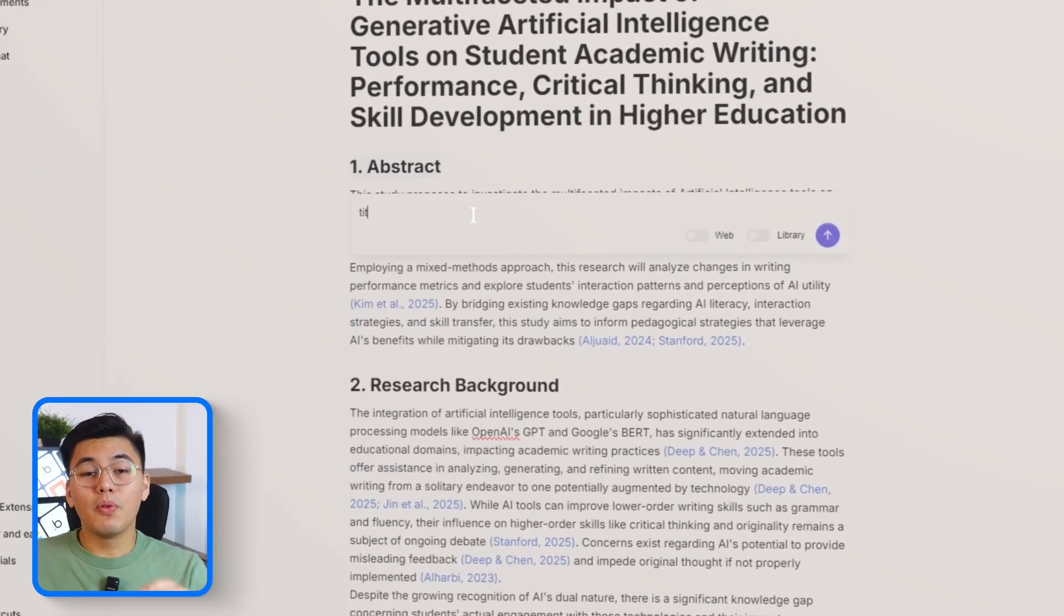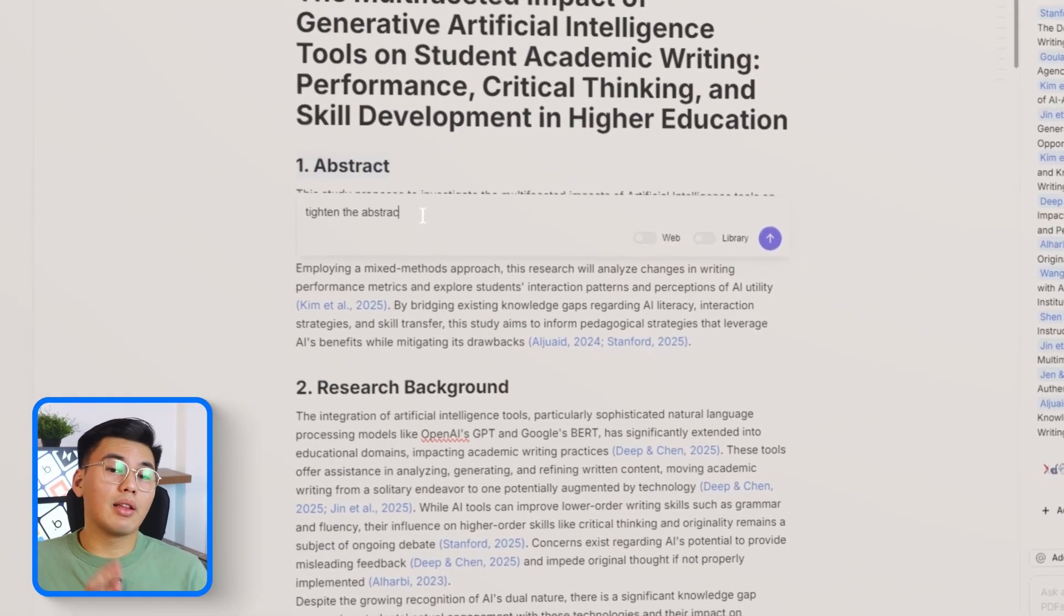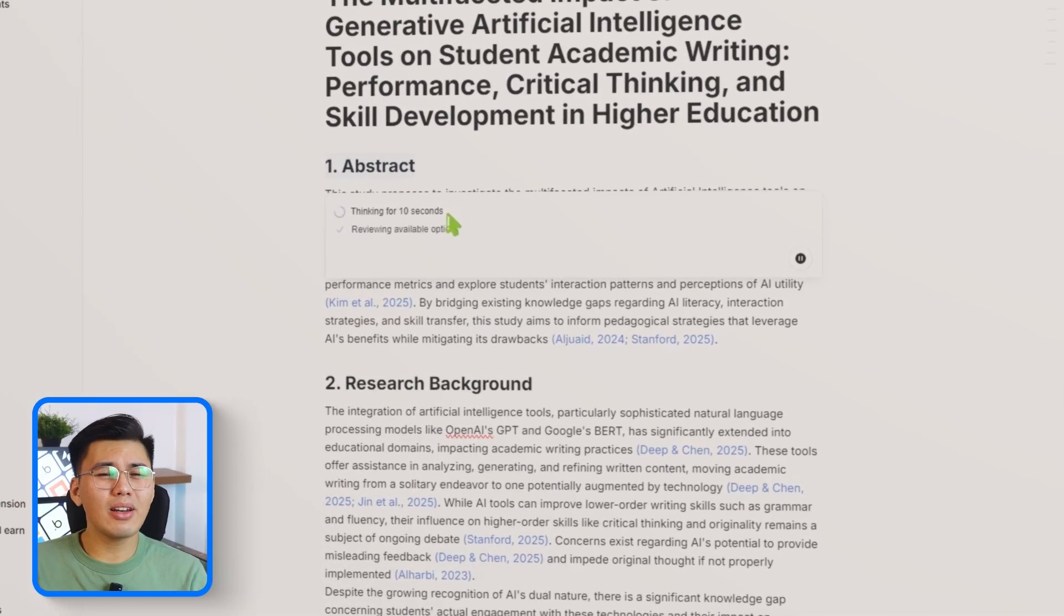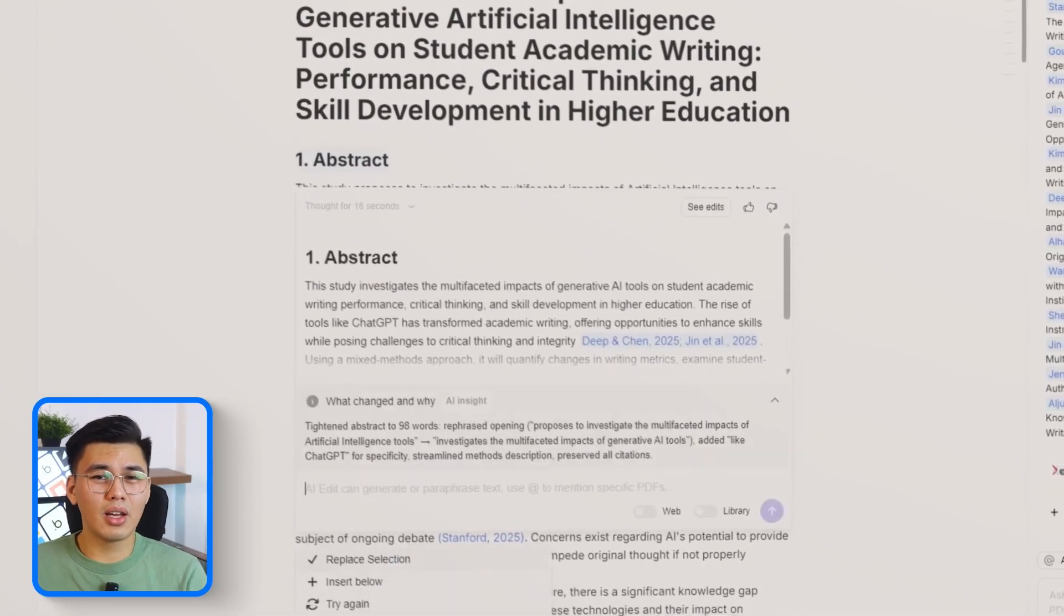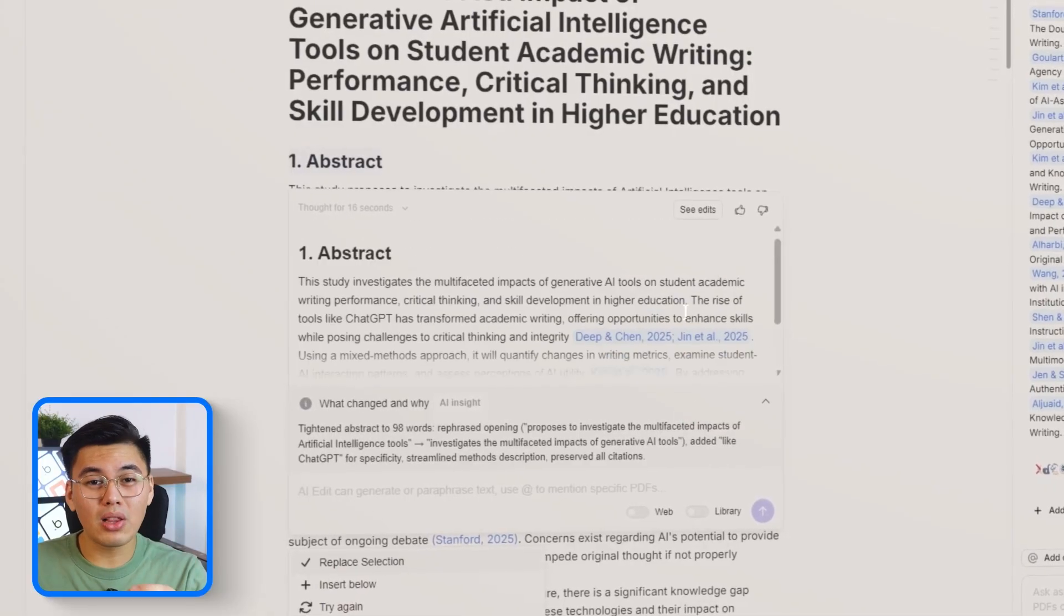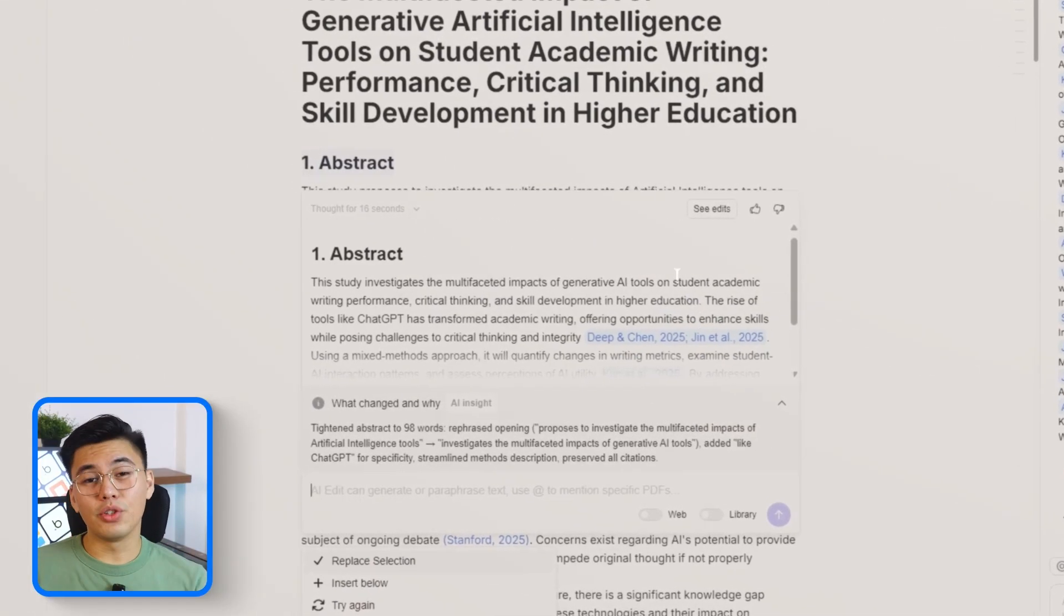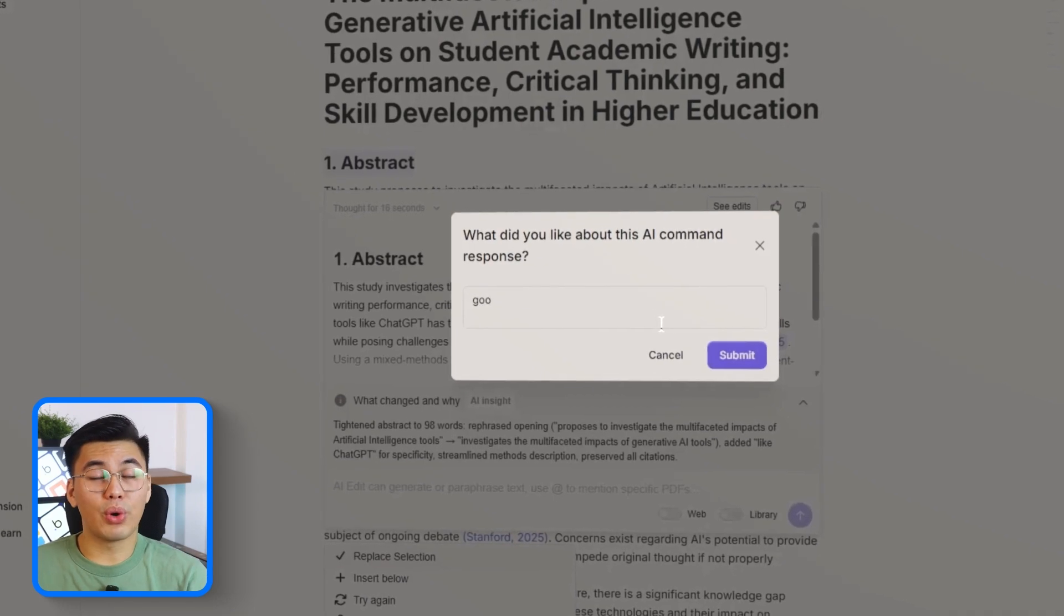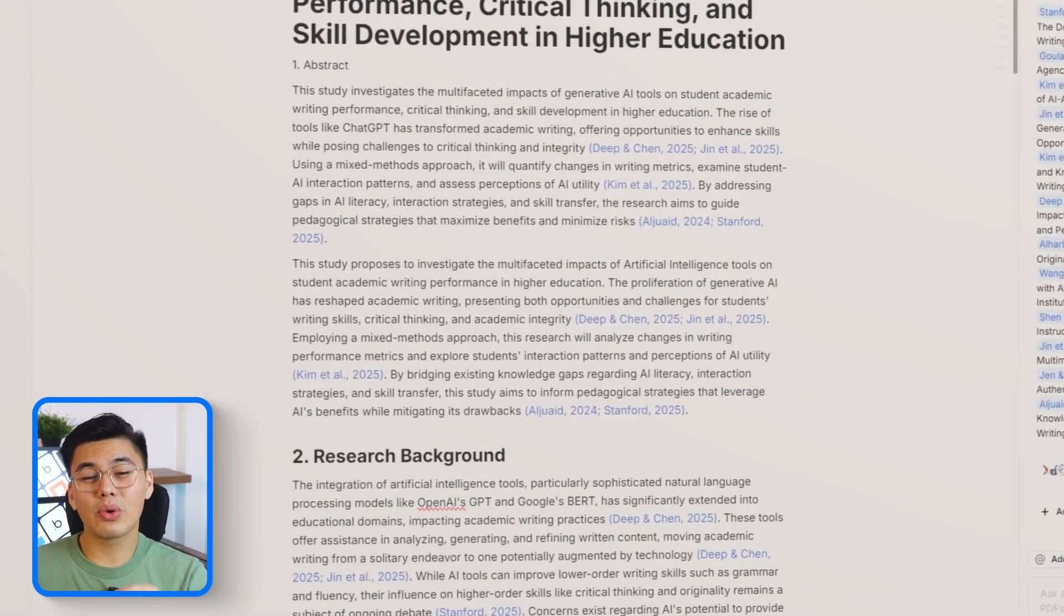Next, we're going to move down to the abstract. I'll highlight the entire section again and run it through Jenny's improvement tool so you can see how the AI handles something that needs to be tightened, concise, and academically polished at the same time. Jenny will tighten the language, clean up any awkward phrasing,